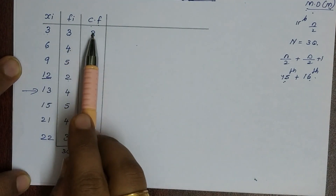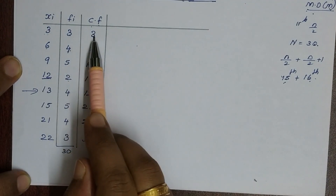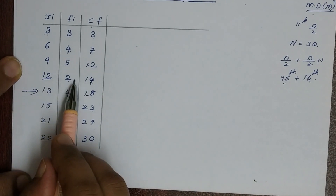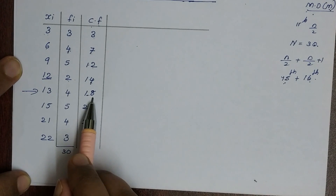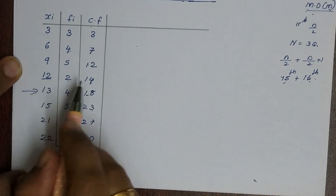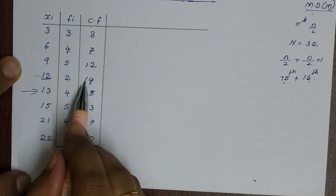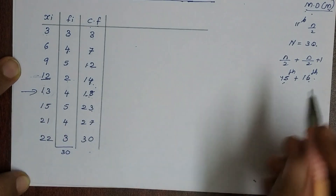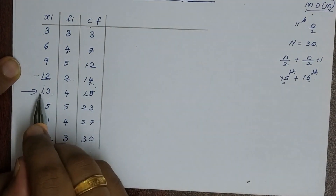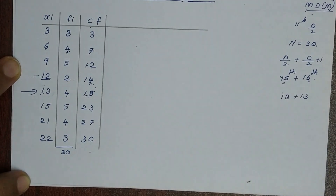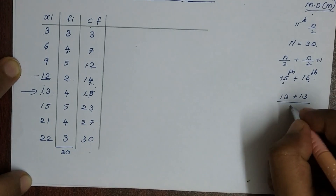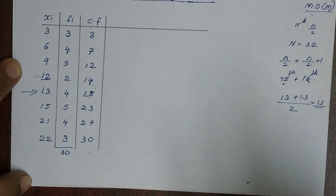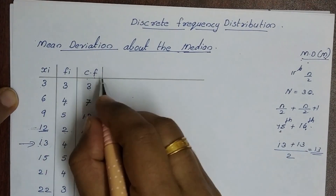So the cumulative frequency values are 1, 3, 5, 8, 14, and then 18. There is no 14 covering 15 or 16, so we write that the 15th, 16th, and 17th observations all fall at the same value. That value is 13. So the median is (13 + 13) / 2, which is equal to 13.